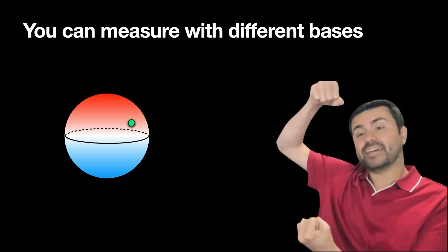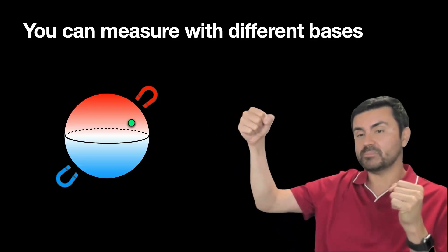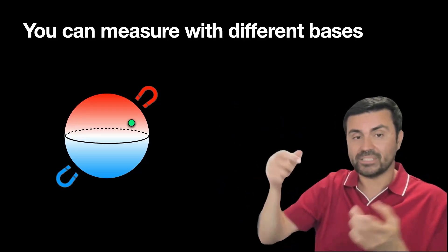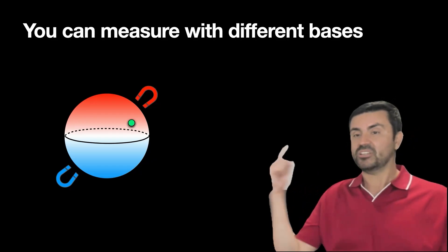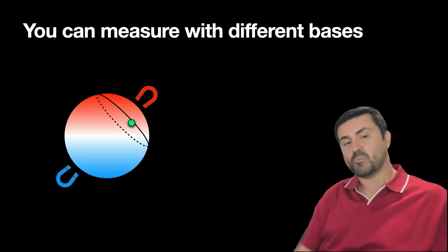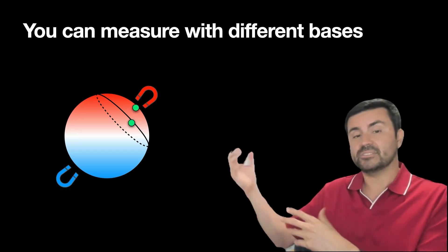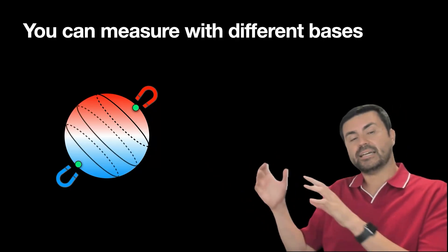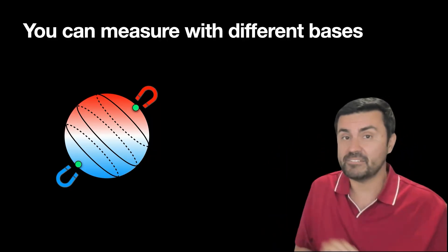What do I mean by bases? The north pole–south pole axis is a basis, and I can put my magnets anywhere I want as long as they're at antipodal points on the sphere. So I could put them here, or here, or wherever. Now what matters is not the parallels, but any circle perpendicular to the line between the two magnets. The probability of the green dot going to the red magnet is based on how close it is to that magnet. This measurement with different bases is what makes everything very, very strange.